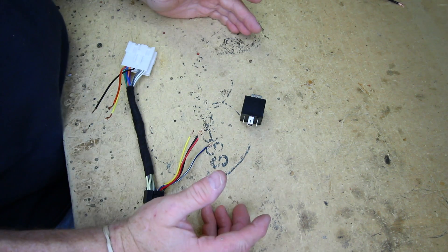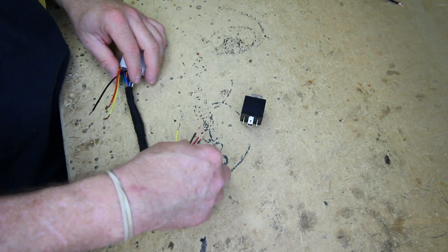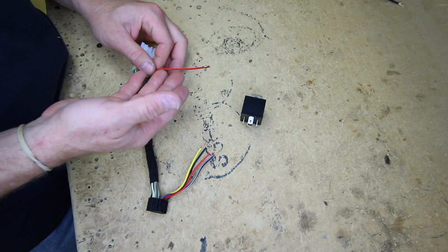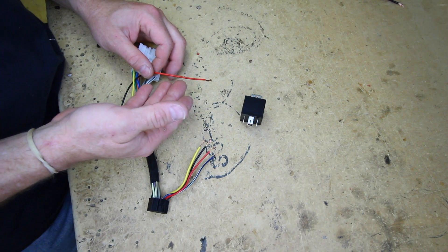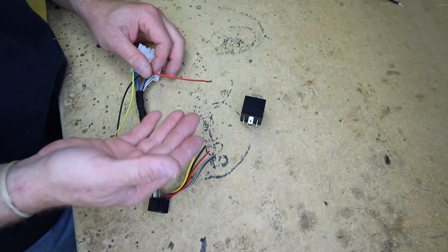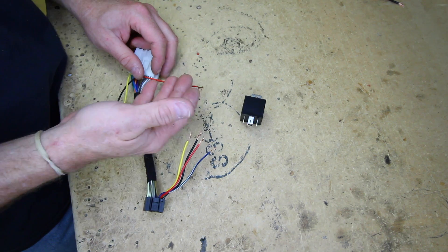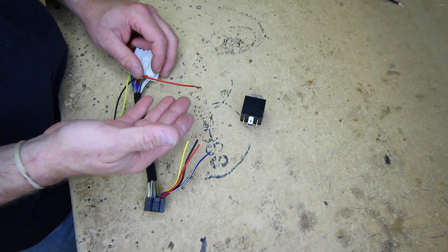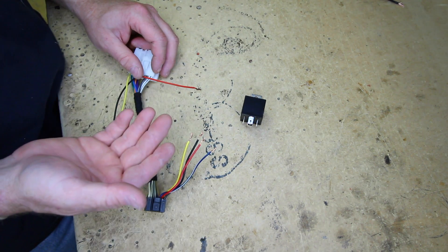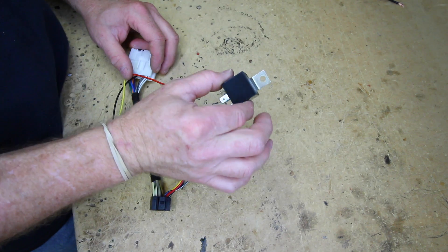So for our second application today we need to increase the output voltage of the factory accessory wire, because we're going to hook up a backup camera and the factory accessory wire doesn't put on enough voltage to power the radio and the backup camera. So we've got our relay.